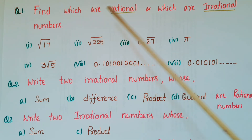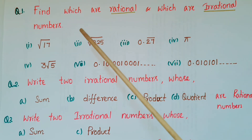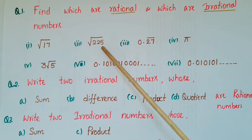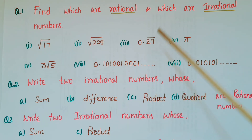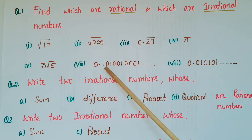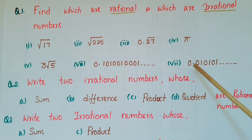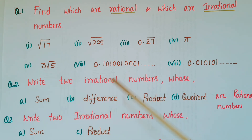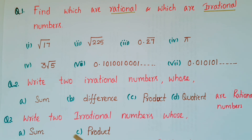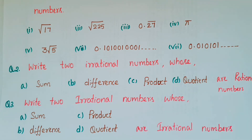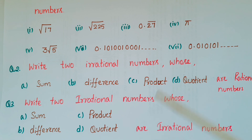Now please answer these questions. First: find which of the following are rational and which are irrational — root 17, root 225, 0.27 bar, pi, 3 root 5, 0.101001001001 and so on, and 0.0001010101 and so on. Second question: write two irrational numbers whose sum, difference, product, and quotient are rational numbers. Third: write two irrational numbers whose sum, difference, product, and quotient are irrational numbers.